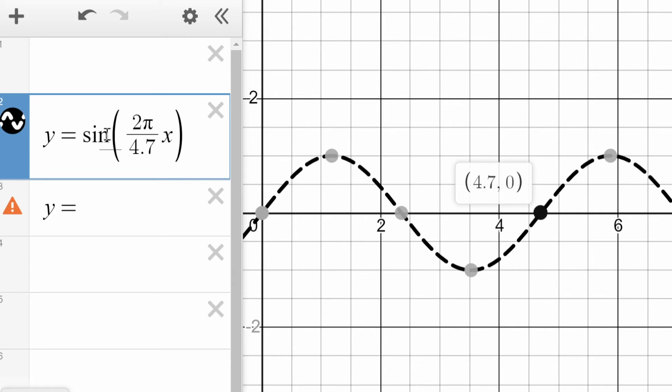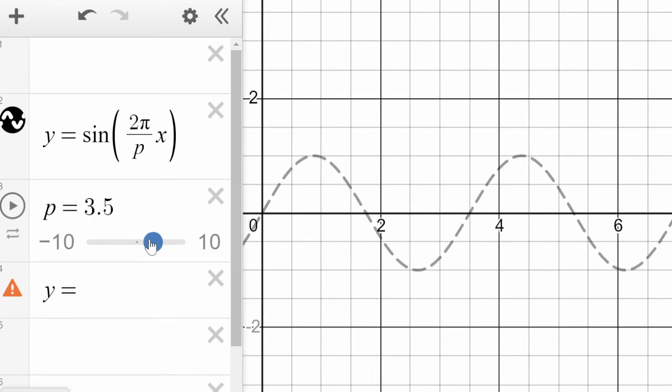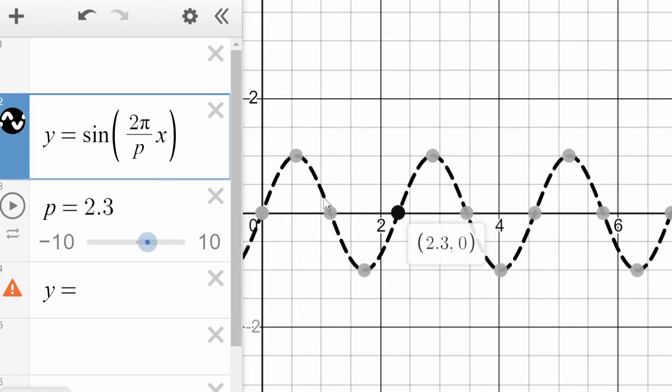If you write a trig function where it's sine of 2π over a number times x, that number is the period. So in fact, you can put a number here like p and then you can create a slider for p and then you can change the period. If I make this number a bigger number now, it makes the period whatever that b-value is. So to have a period that's a rational number, we're going to structure the equation as sine of 2π over the period times x. Now let's summarize that and use it in a few examples.